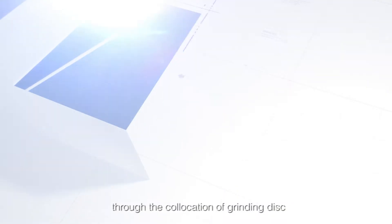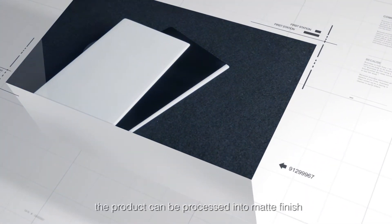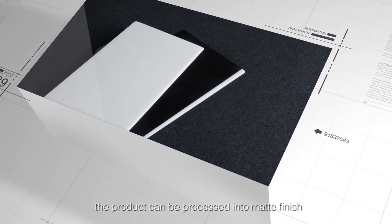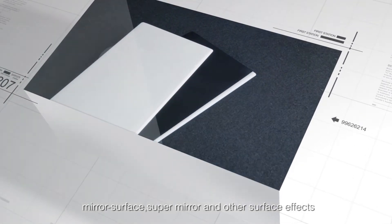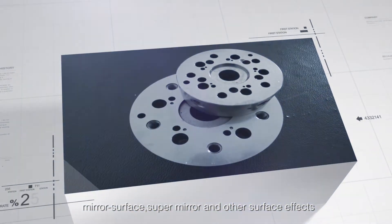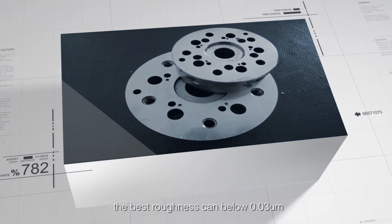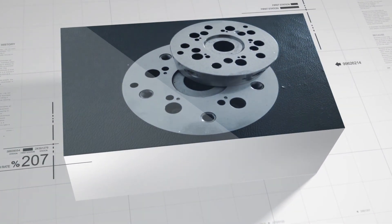Through the combination of grinding disk and consumable material, the product can be processed into matte finish, mirror surface, super mirror, and other surface effects. The best roughness can be below 0.03 micrometers.